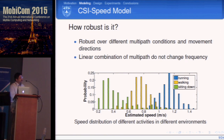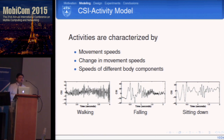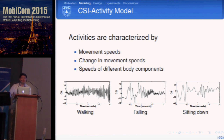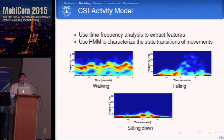We build a CSI activity model based on speed measurements. Human activities are characterized by movement speed and the change of movement speed. For example, falling starts static, then speeds up rapidly, then becomes static again on the floor. We use time-frequency analysis to extract speed sequences. In these spectrograms — time on the x-axis, frequency corresponding to speed on the y-axis — different activities show distinct movement speed transitions.